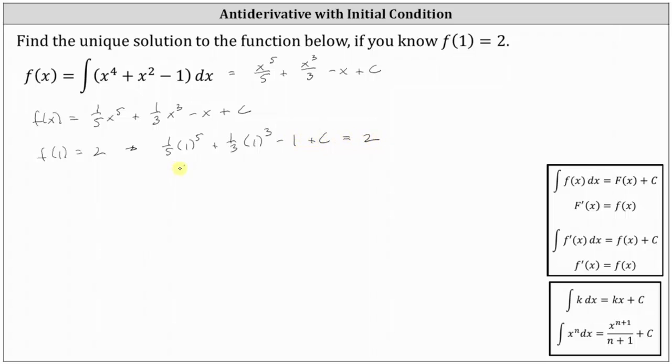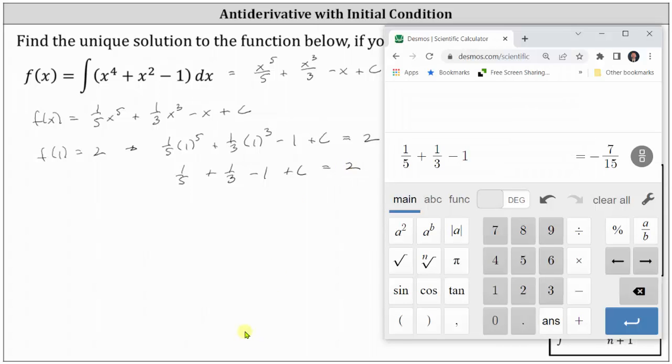Simplifying, we have one fifth plus one third minus one plus c equals two, and one fifth plus one third minus one is equal to negative seven fifteenths.